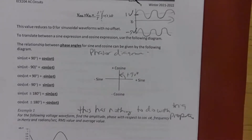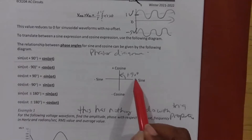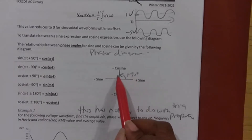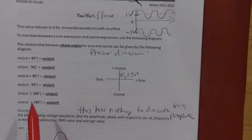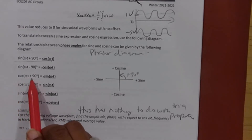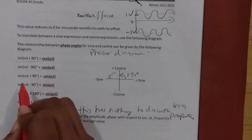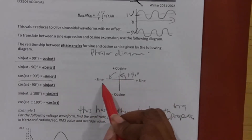If you've memorized this from trig you don't need the diagram, but someone always puts the wrong angle. So: a sine wave plus 90 degrees equals cosine(ωt). Conversely, if I have a cosine and add 90 degrees, it becomes negative sine. Cosine plus 90 degrees is negative sine.